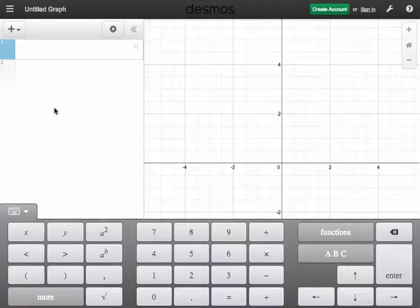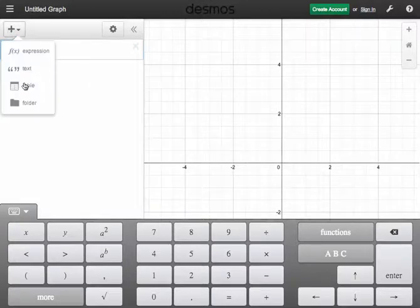Okay, I'm going to show you how easy it is to make a table and have that table be interactive. So I'm going to click on the plus sign here, I'm going to add an item, and choose table.